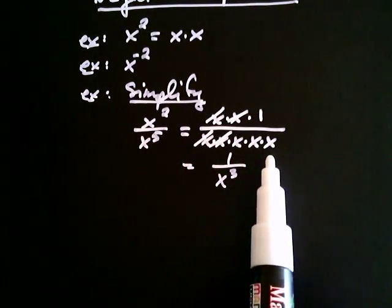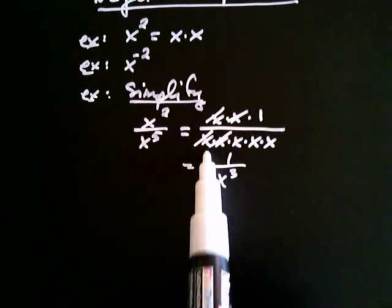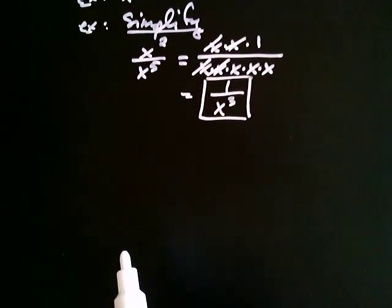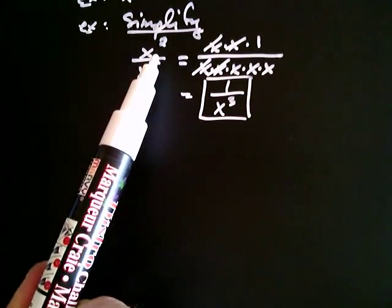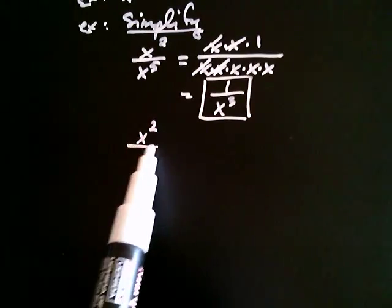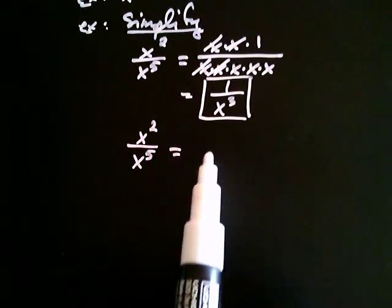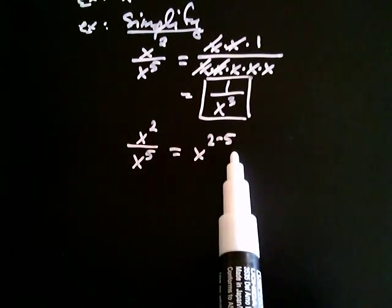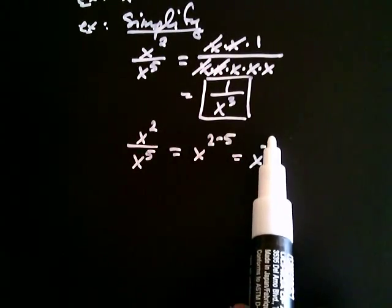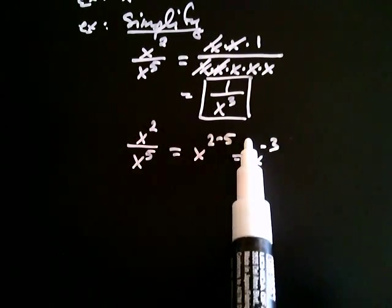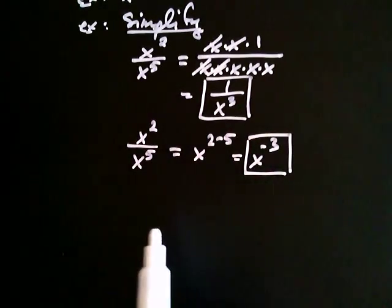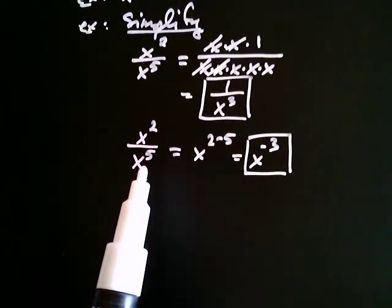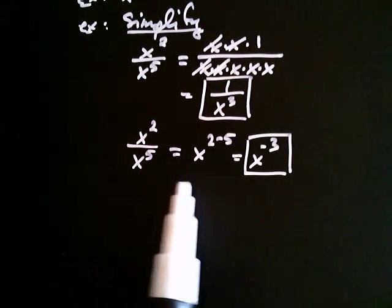That happened because we had three extra factors of x in the denominator, so one over x to the third is what we get. On the other hand, if we apply the rules of exponents, we take the top exponent and subtract the bottom one. So we get x to the two take away five. Two take away five is equal to negative three, so I get x to the negative third. This is just another way of doing the same problem. One way gives one over x cubed, the other gives x to the negative third.